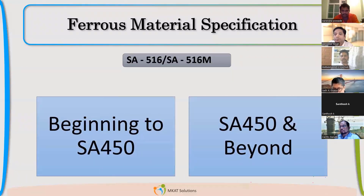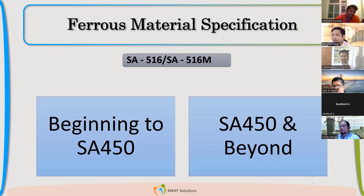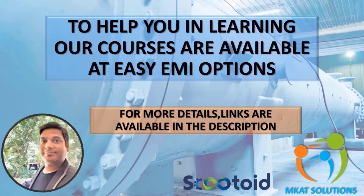So, as we said, SA-0 to SA-450 is your Part A, Volume 1. SA-452 and beyond is the second part of Part A. So SA-516 will come into the second part.